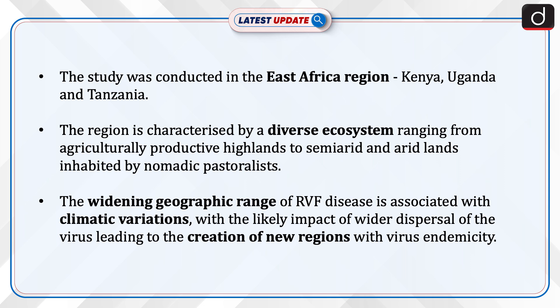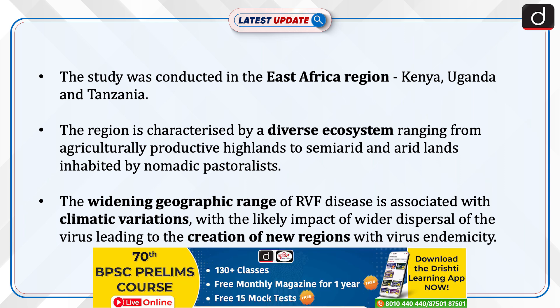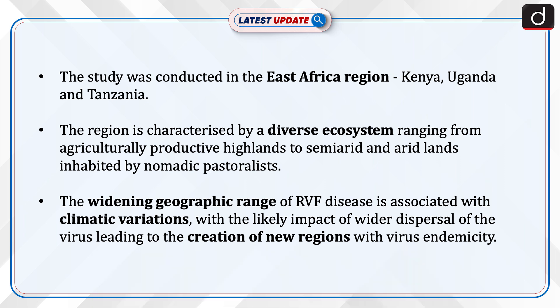The study was conducted in the East Africa region — Kenya, Uganda, and Tanzania. The region is characterized by a diverse ecosystem ranging from agriculturally productive highlands to semi-arid and arid lands inhabited by nomadic pastoralists. The widening geographic range of RVF disease is associated with climatic variations, with the likely impact of wider dispersal of the virus leading to the creation of new regions with virus endemicity.